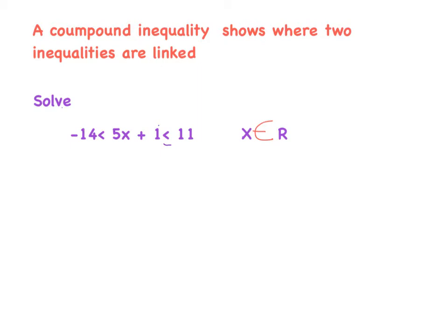If we're asked to solve it — like all algebra — we're asked to find the value of x, the possible outcomes. We're going to use balancing. It's extremely important that what we do to one side we must do to the other. Treat the inequality like an equal sign, except this time we basically have three sides.